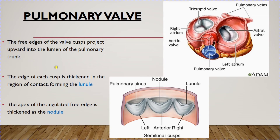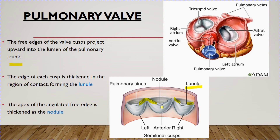When the valves are open, the free edges of the valve cusps project upward into the lumen of the pulmonary trunk, allowing blood to enter. The edges of each cusp are thickened in the region of contact to form the lunula. The apex of the angulated free edge is thickened as the nodule. So the central thickening is called the nodule, and the thickened edges are called the lunula.